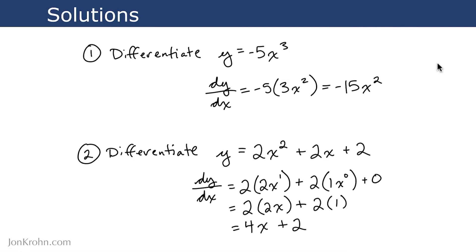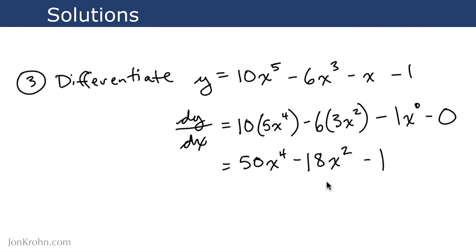All right, so here are your solutions. Number one comes out to negative 15x squared. Exercise two comes out to 4x plus 2. Exercise three comes out to 50x to the power of 4 minus 18x squared minus 1.